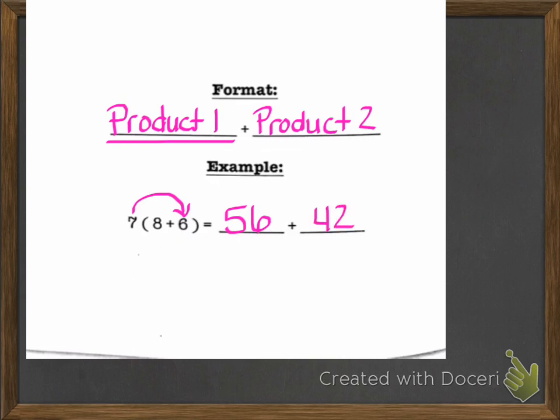To find the answer to this problem, you would do 7 times 8, write down the 56, then do 7 times 6, write down the 42, and then we're going to add those two numbers together. When we do that, we get 98 as a final answer. So you can see that what we did in the example above, this is a similar question, but we just did it in a different type of way.